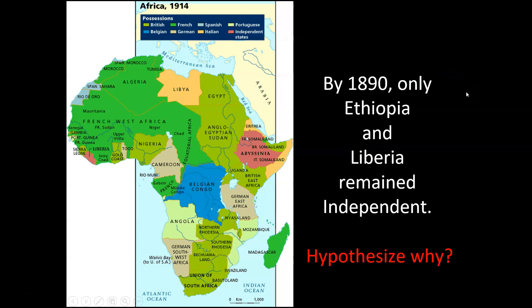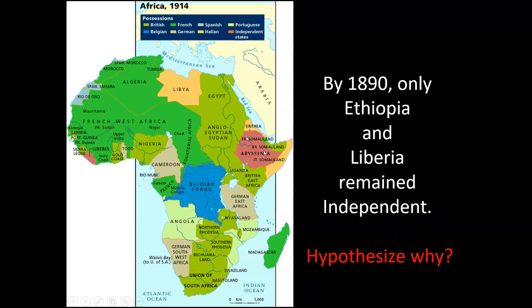By 1890, only Ethiopia and Liberia remained independent. Ethiopia just flat out won — they fought and they won. Whereas Liberia was created by former American slaves a few decades before, so it had the protection of America and was left alone. But the rest of the continent — 94% — was taken over by European powers.